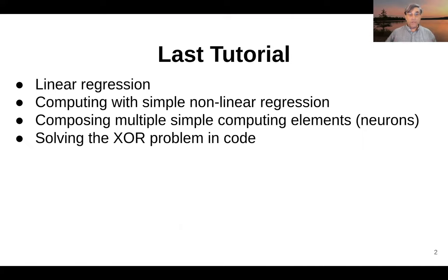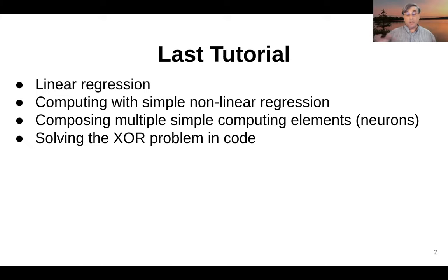In the last tutorial we did a few things in a non-supercomputer context where we talked a little bit about linear regression, which gave us a little bit of motivation for what we were trying to accomplish. Then we started to talk about very simple computing elements that did some non-linear representation of functions and we did some regression in that context. Then we started to compose those individual elements — we can call those neurons — in order to compute more complicated functions, and we ended last time by talking about a variety of different kinds of problems and finished with solving the XOR problem in a little bit of code in TensorFlow and Keras.